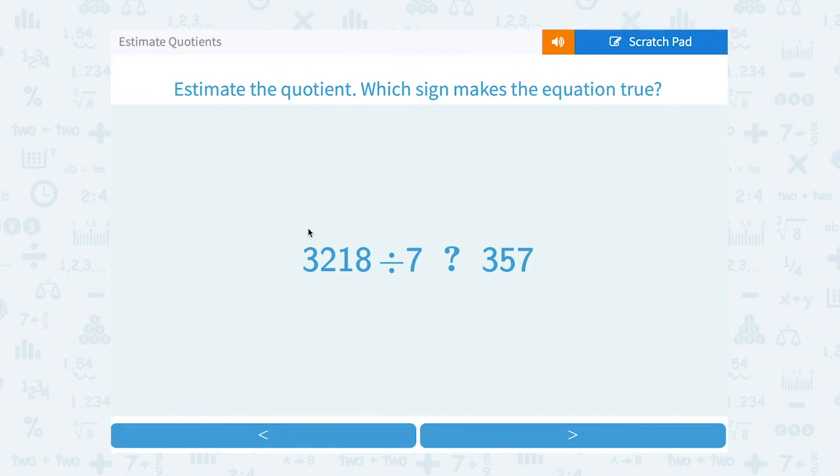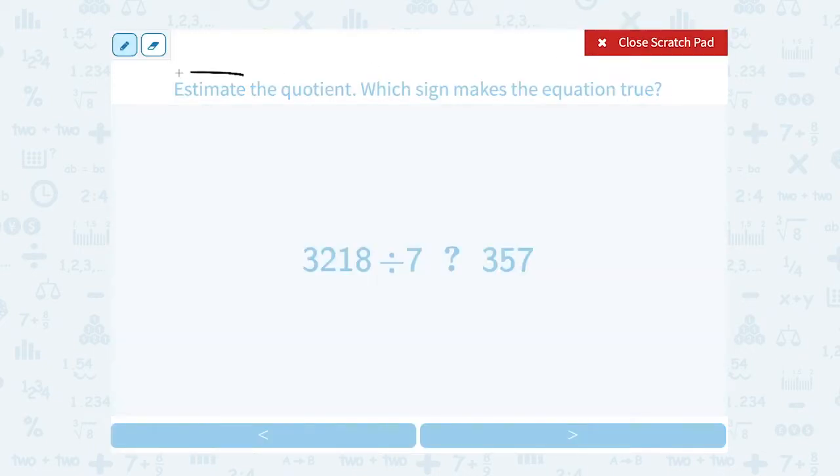Well, we have 3,218 divided by 7, and I want to figure out, is that less than or greater than 357? So when they tell us to estimate, the idea is we want to pick a number that's close to this that's going to be a little easier to work with or a little easier to use mental math with.